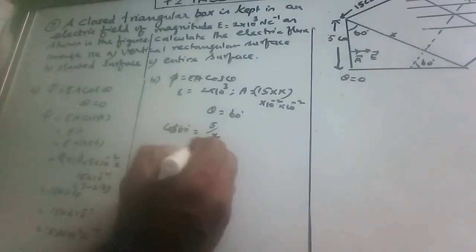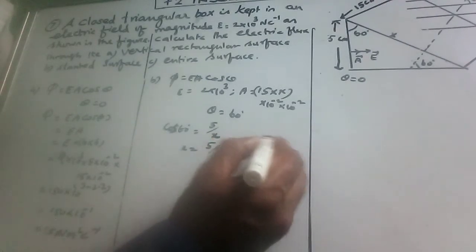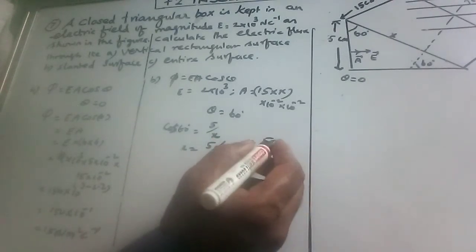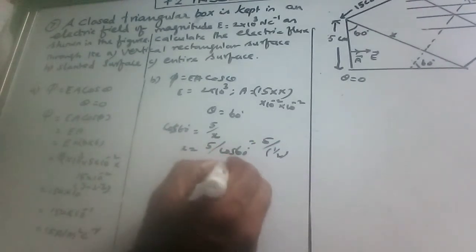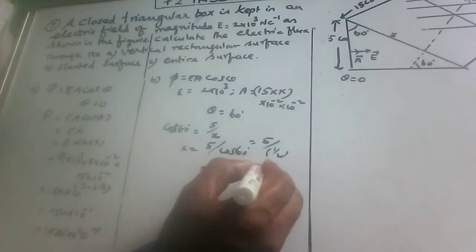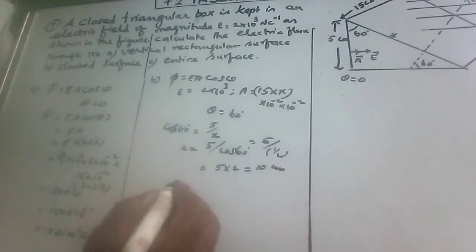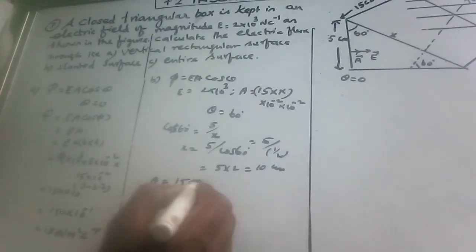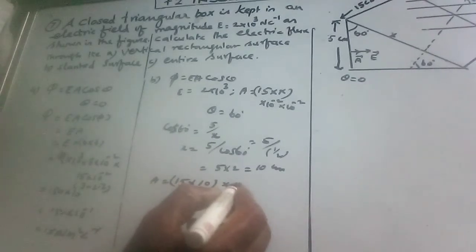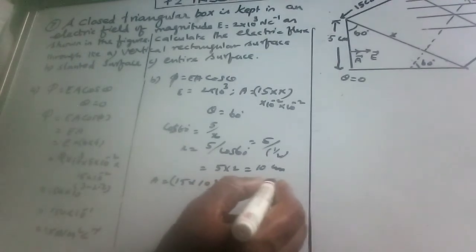x is equal to 5 by cos 60. So 5 by cos 60, and cos 60 equals 1 by 2, so 5 into 2 is equal to 10. So x is equal to 10. So x is equal to 10 into 10 power minus 2, or 10 centimeters, which is 10 into 10 power minus 2 meters.